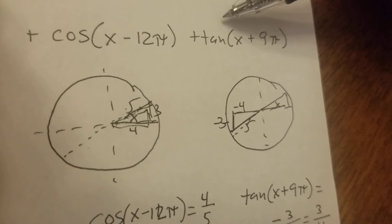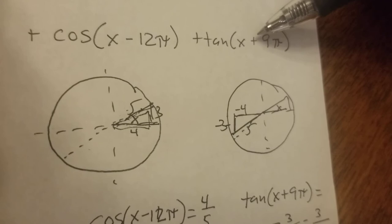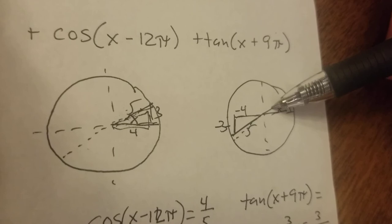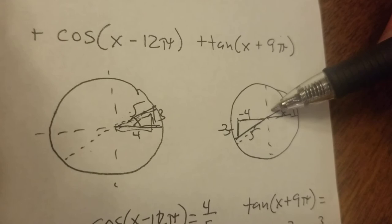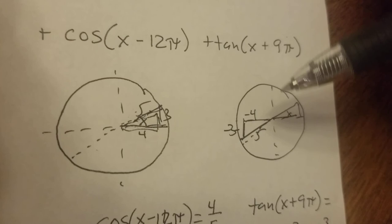And then the last term is tangent of x plus 9 pi. Maybe it was minus 9 pi, I don't know, it won't really matter. Same thing here, we'll start out with x, and it's an odd number, so we're not going to end up at the same spot, we're going to end up on the other side. 1, 2, 3, 4, 5, 6, 7, 8, 9. So we're going to end up over here.